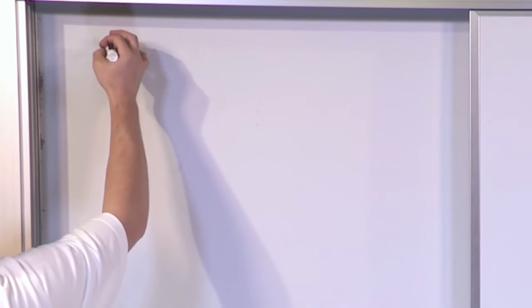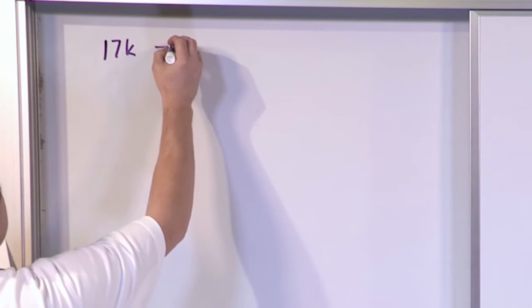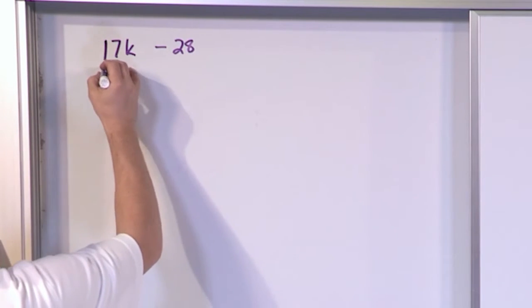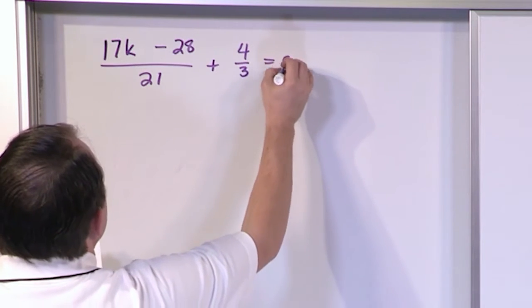All right, so let's ratchet up things just a little bit more. Let's say we have 17k minus 28 over 21 plus 4 thirds is equal to zero.